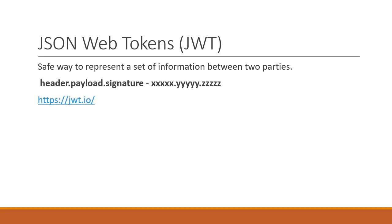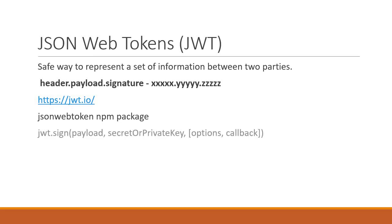You can go to JWT.io for more information on the format. For us though, what really matters is how a JWT is generated and verified. For that, we use the JSON Web Token npm package. To generate a new token, we use the sign method, passing the payload and a secret key, and any options if required.